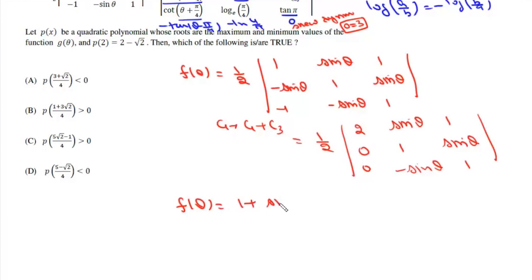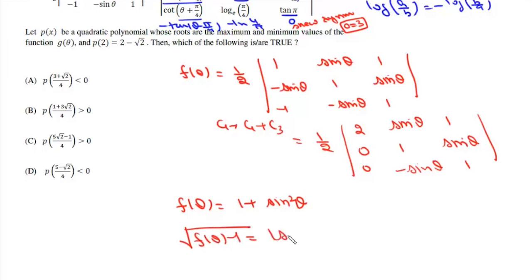After expanding, we get f(θ) = 1 + sin²θ. Therefore √(f(θ) − 1) = √(sin²θ) = |sin θ|.